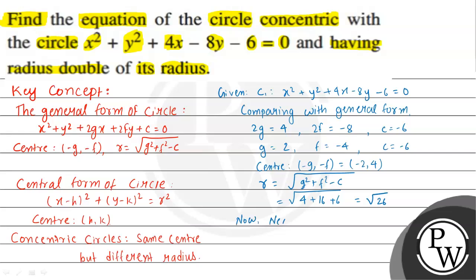For the new circle C2, the center is the same as C1, which is (-2, 4). The radius of C2 will be twice that of C1, so the new radius is 2√26.